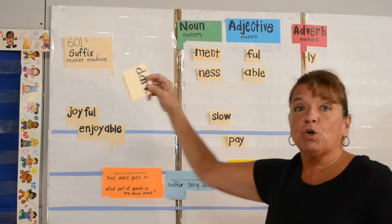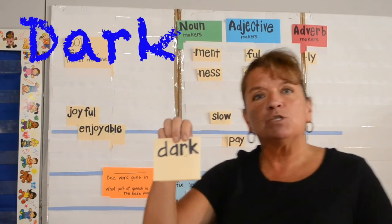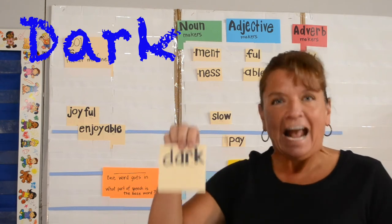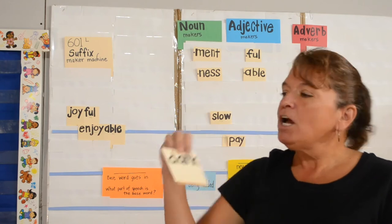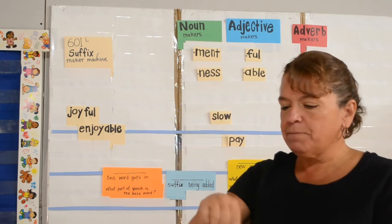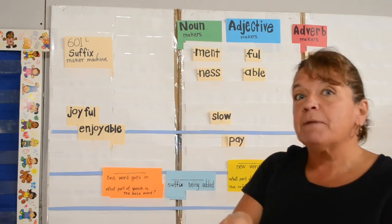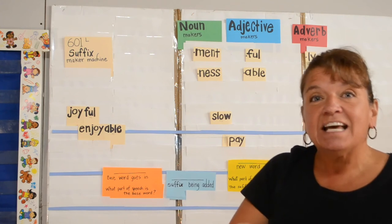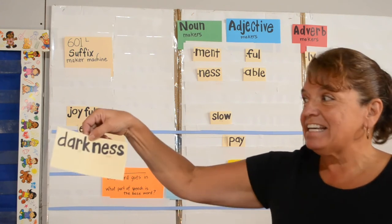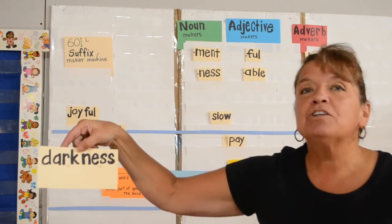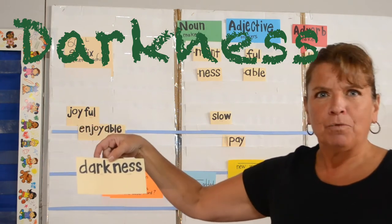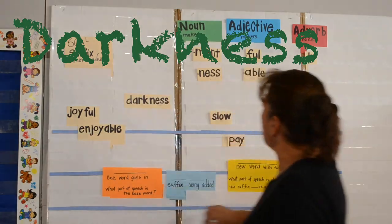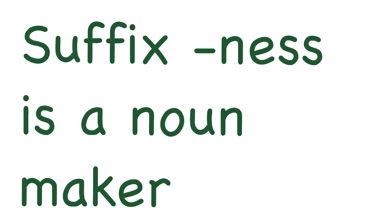Let's take the base word dark. The base word dark is an adjective. We're going to take that adjective dark and put it in the suffix maker machine. We're going to add the suffix N-E-S-S. Out comes the new word darkness — now the word darkness is a noun. So we say that the suffix N-E-S-S is a noun maker.